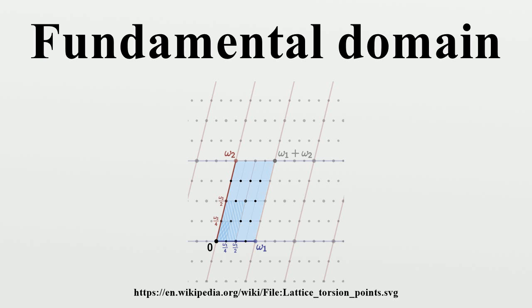For inversion in a point, an orbit is a set of two points, one on each side of the center, except for one orbit consisting of the center only. The fundamental domain is a half space bounded by any plane through the center.